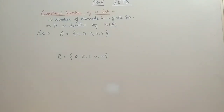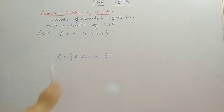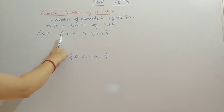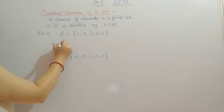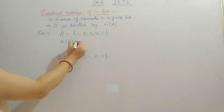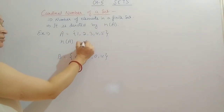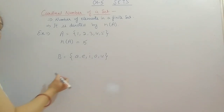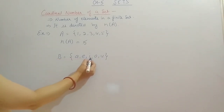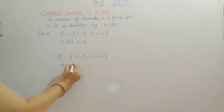After types of sets we have the cardinal number of a set. The cardinal number of a set means the number of elements in a finite set, and it is denoted by N(A) where A is the name of the set. For example, if A = {1, 2, 3, 4, 5}, then N(A) = 5. Another example: if B = vowels of the English alphabet, B has 5 elements, so N(B) = 5.